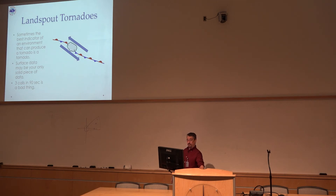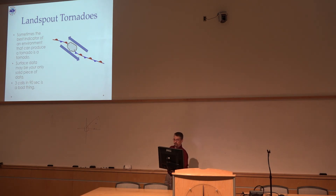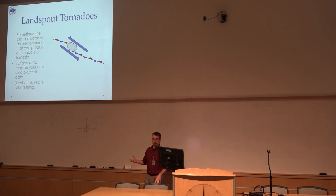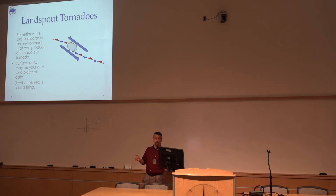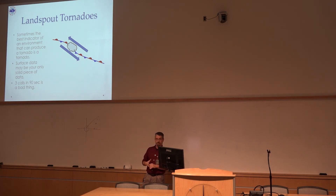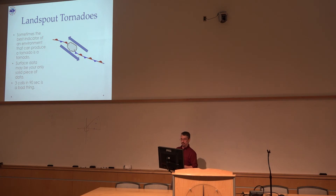On landspout stuff — the mesonet might be the best warning tool you have for a landspout because it's not mesocyclone driven, it's on a boundary with opposing wind flow. If we start getting reports of a tornado that I suspect is a landspout, first thing I do is run to the mesonet. If I've got a boundary showing southeast winds up against northwest winds — something opposing each other — I'm going to lean towards the idea that there's probably something there.